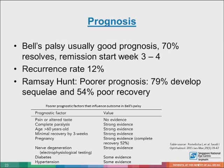The prognosis in Bell's palsy is good. As mentioned, 70% resolve, and remission usually starts from week three to four. Recurrence rate is reported to be 12%. However, Ramsay Hunt syndrome has a much poorer prognosis, with 79% of patients developing sequelae and more than half having very poor recovery.